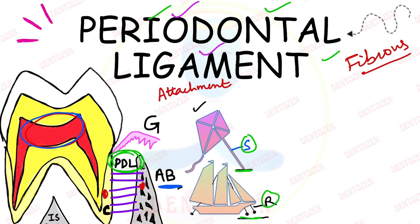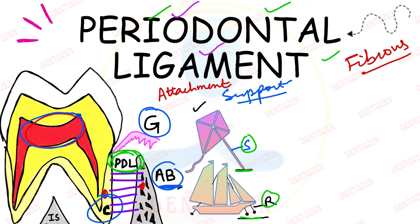Along with the gingiva, which lies above the periodontal ligament, cementum, and alveolar bone, it supports the tooth — making the support system of the tooth. Whenever there are masticatory stresses, these structures adapt themselves to meet those functional requirements. These four structures — gingiva, PDL, alveolar bone, and cementum — together are known as periodontium.